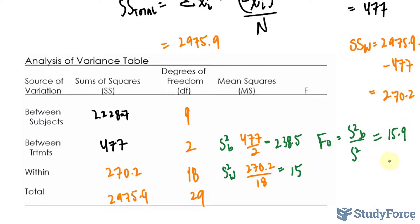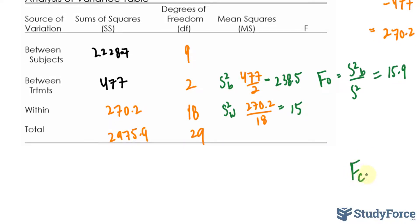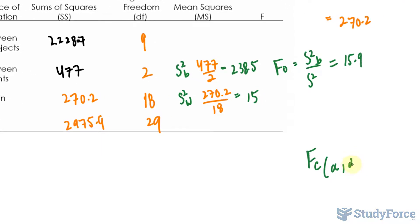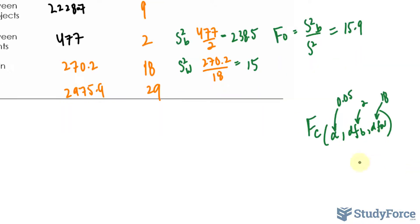Next, we need to come up with a decision. And the decision rule requires we know what F critical is. And that's dependent on the alpha value, the degrees of freedom between and within. So DFB and DFW. We determined that in the question as 0.05. This one, degrees of freedom between, is 2. And that one is 18. We use the F distribution table to find this number. F critical should be 3.55.